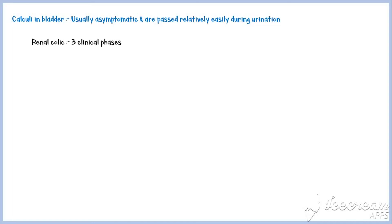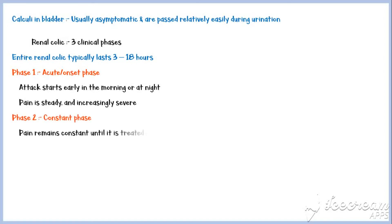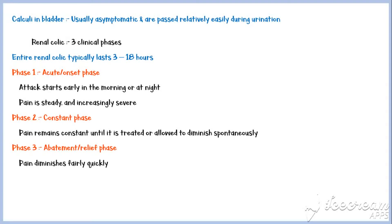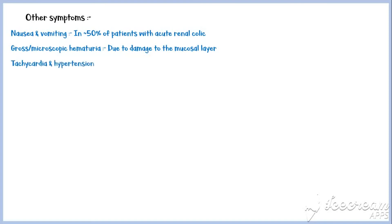Renal colic has three clinical phases, and the entire episode typically lasts between 3 to 18 hours. Phase 1 is the acute or onset phase: the attack usually starts early in the morning or at night, wakening the patient from sleep, with pain that is steady and increasingly severe. Phase 2 is the constant phase, where pain remains constant until treated or allowed to diminish spontaneously. Phase 3 is the abatement or relief phase, where pain diminishes fairly quickly. Other symptoms include nausea and vomiting, seen in approximately 50% of patients with acute renal colic; gross or microscopic hematuria due to damage to the mucosal layer of the urinary tract; and tachycardia and hypertension.